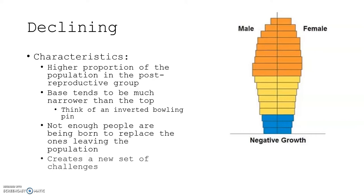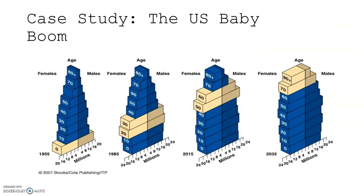We can look at different case studies using population pyramids. In 1955, during the baby boom, there was a huge number of babies born after World War II — you can see that highlighted on the diagram. As we go to 1985, the baby boomers are in their 20s and 30s. By 2015, they're in their 50s and 60s. Projecting into 2035, we still have that large bump in the 70s and 80s, which impacts society in the United States due to that large generational group.